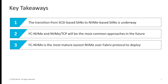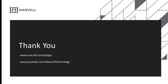Here are the key takeaways from this video. The transition from SCSI to NVMe fabrics is happening now and will continue for several years. FC NVMe and NVMe over TCP will be the most common approaches deployed from SMB to the enterprise. FC NVMe is the most mature and easiest of the NVMe over fabric protocols to deploy and is unlikely to be replaced by Ethernet-based approaches. For more information, visit www.marvell.com/Q-Logic, and be sure to check out our other Follow the Wire videos on the Marvell YouTube channel. Thanks for your time and attention.